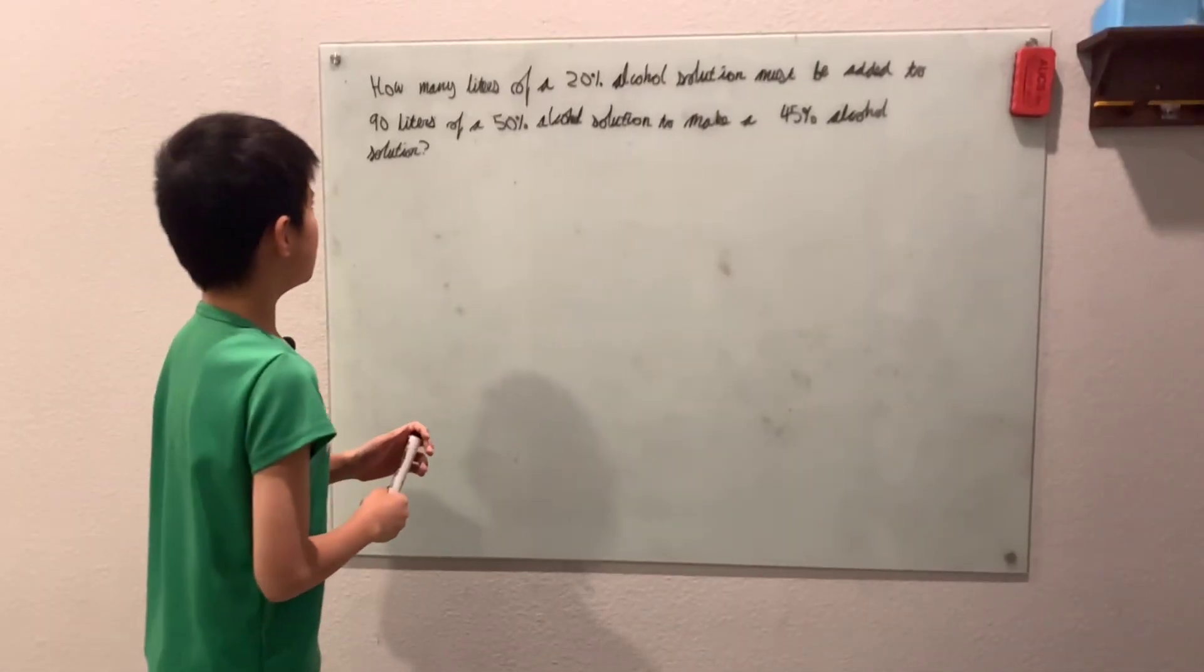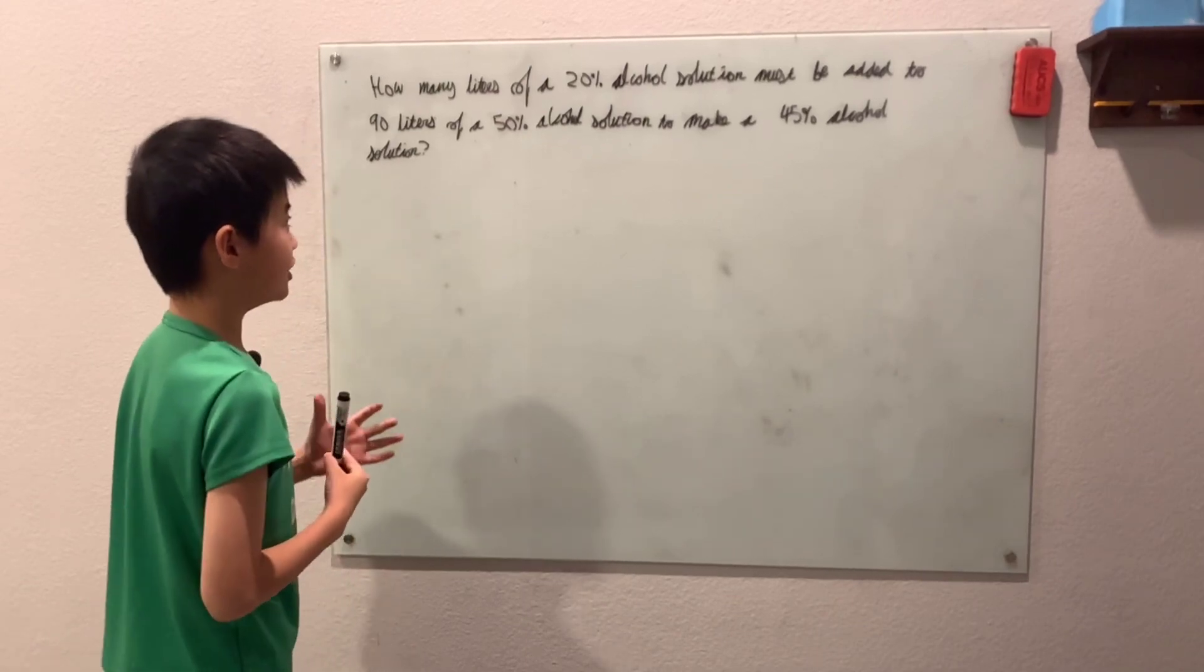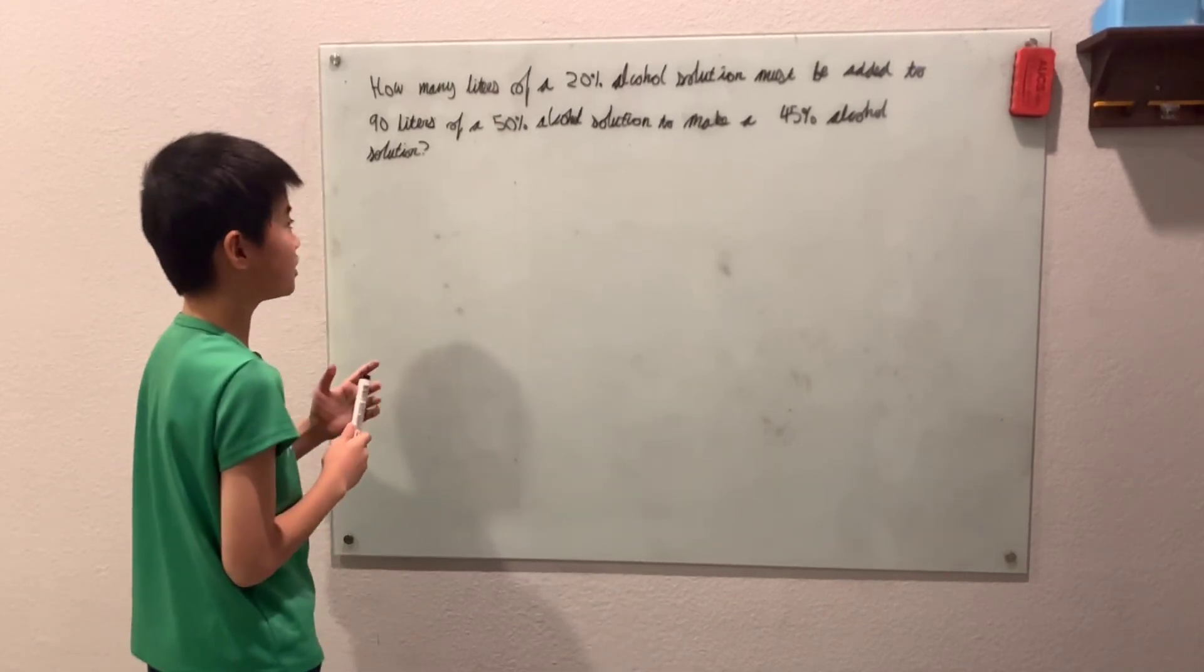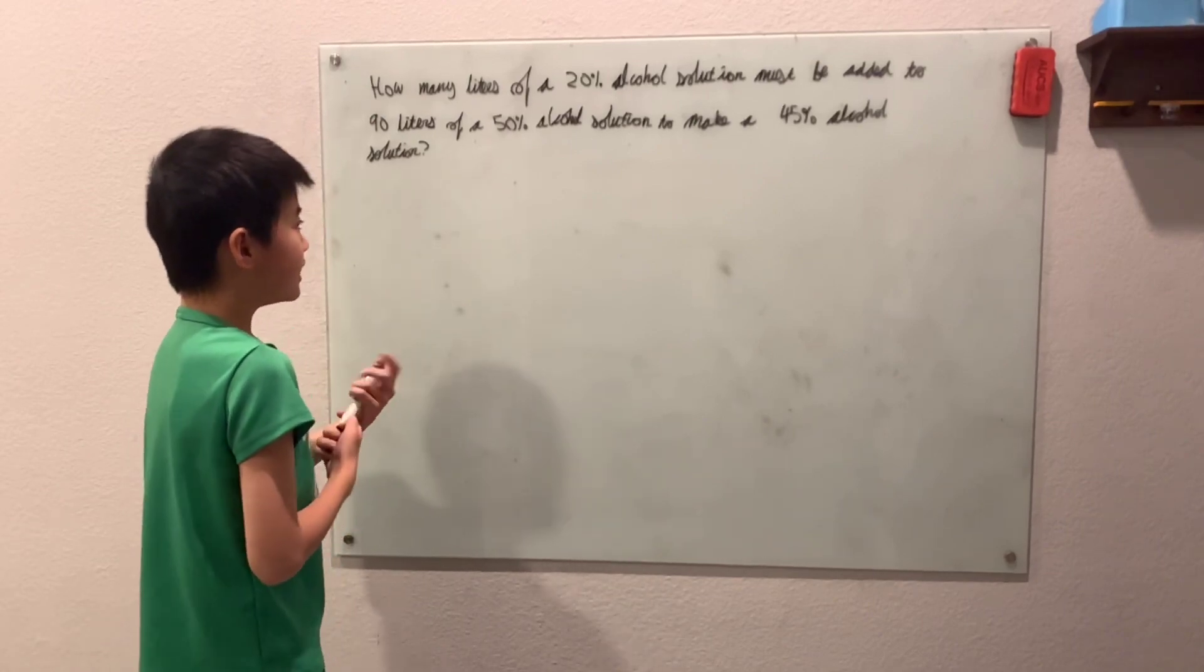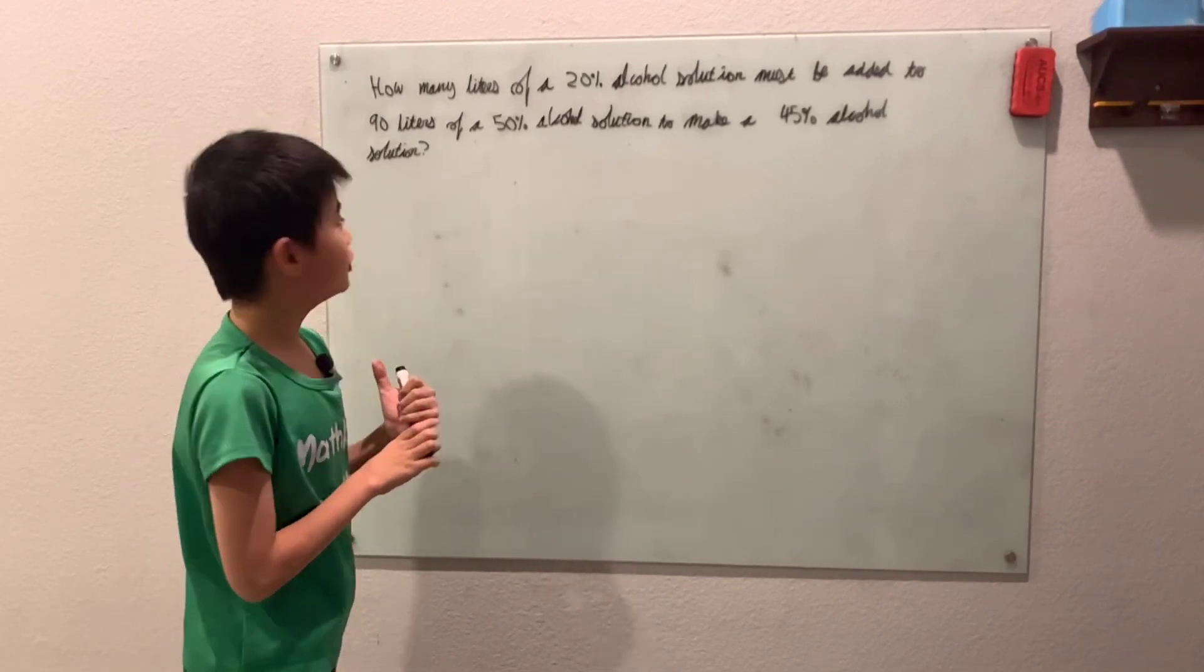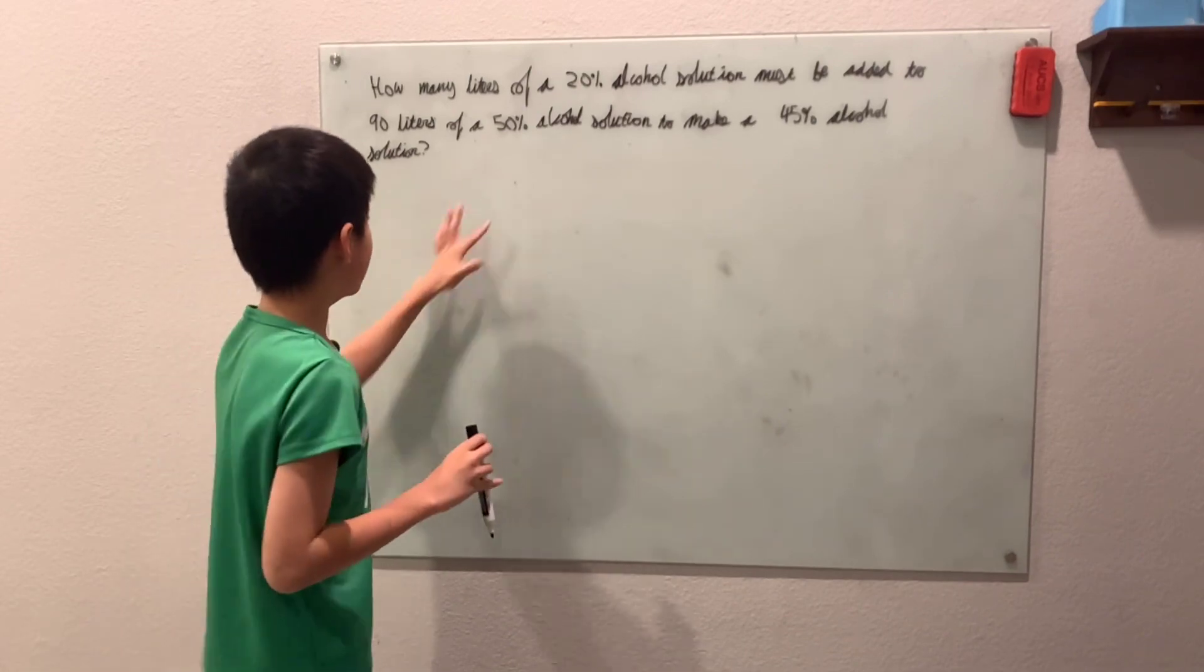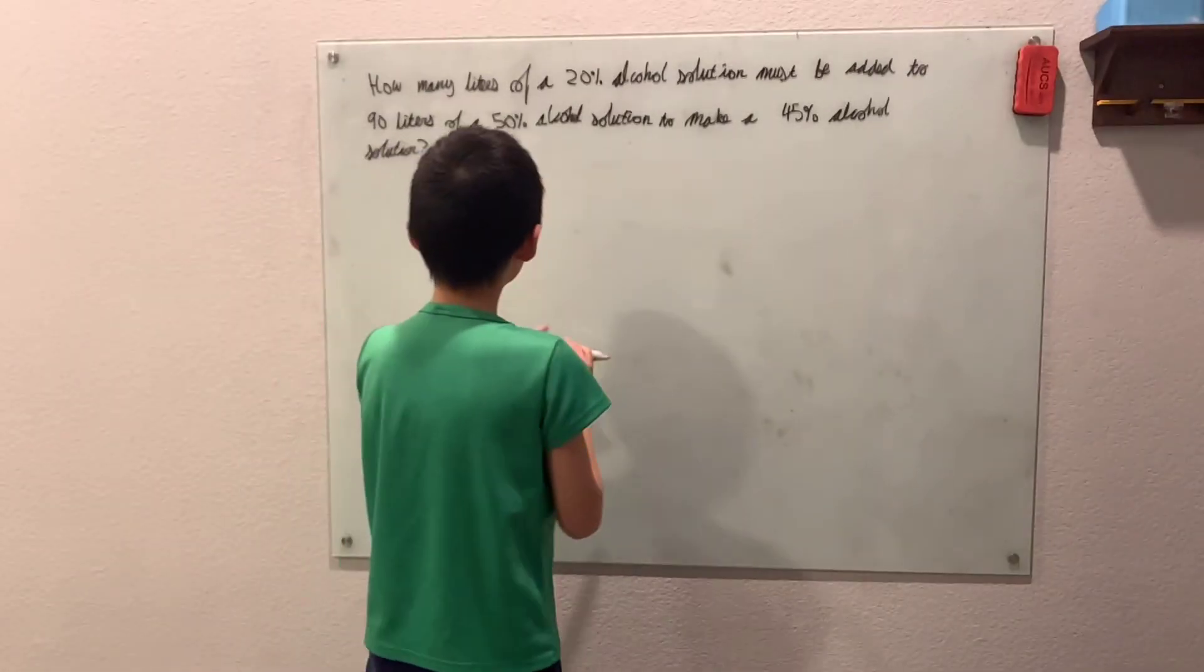How many liters of a 20% alcohol solution must be added into 90 liters of a 50% alcohol solution to make a 45% alcohol solution? So now I'm going to introduce the CVS method. So basically it works like this.